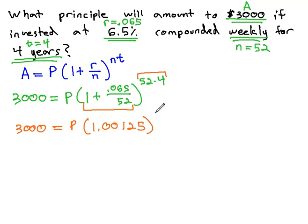52 times 4, and the exponent is 208. So now we should be able to calculate on our calculator the 1.00125 to the 208 power, giving us 3,000 equals P times 1.00125 to the 208 power.